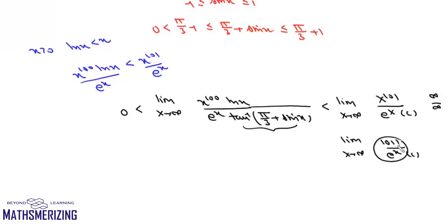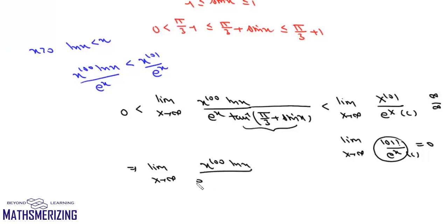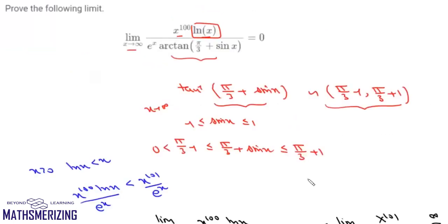Since 101! divided by infinity is 0, by the sandwich theorem we conclude that the limit as x tends to infinity of x^100 · log x divided by e^x · arctan(π/3 + sin x) equals 0, which is what we needed to prove.